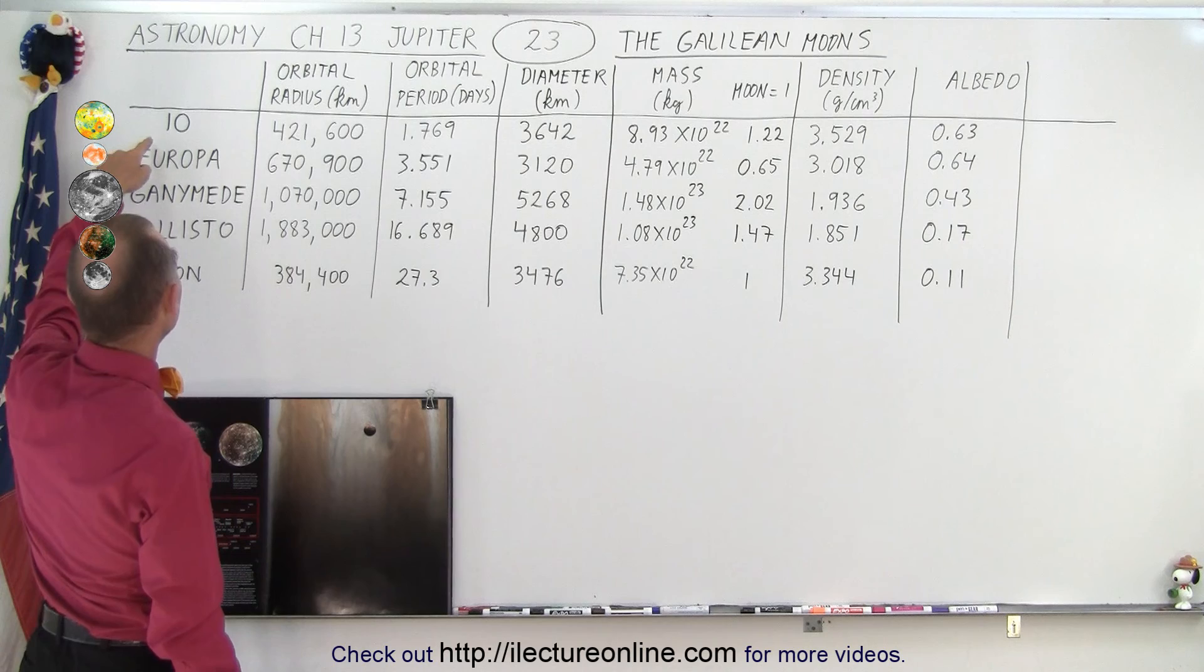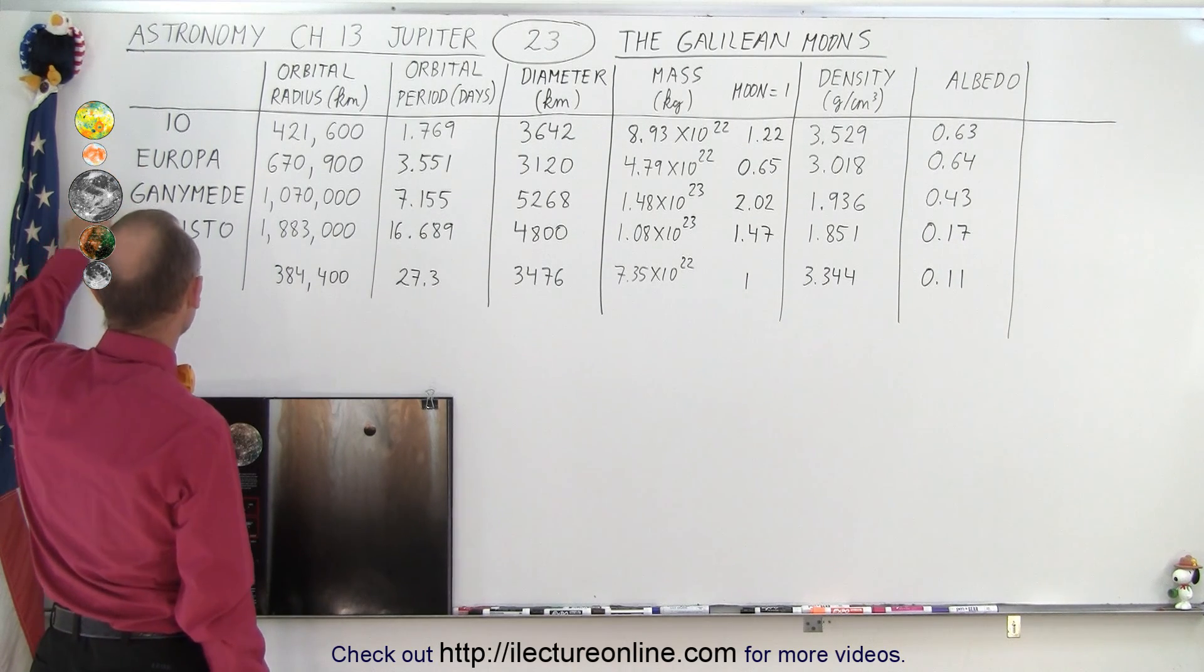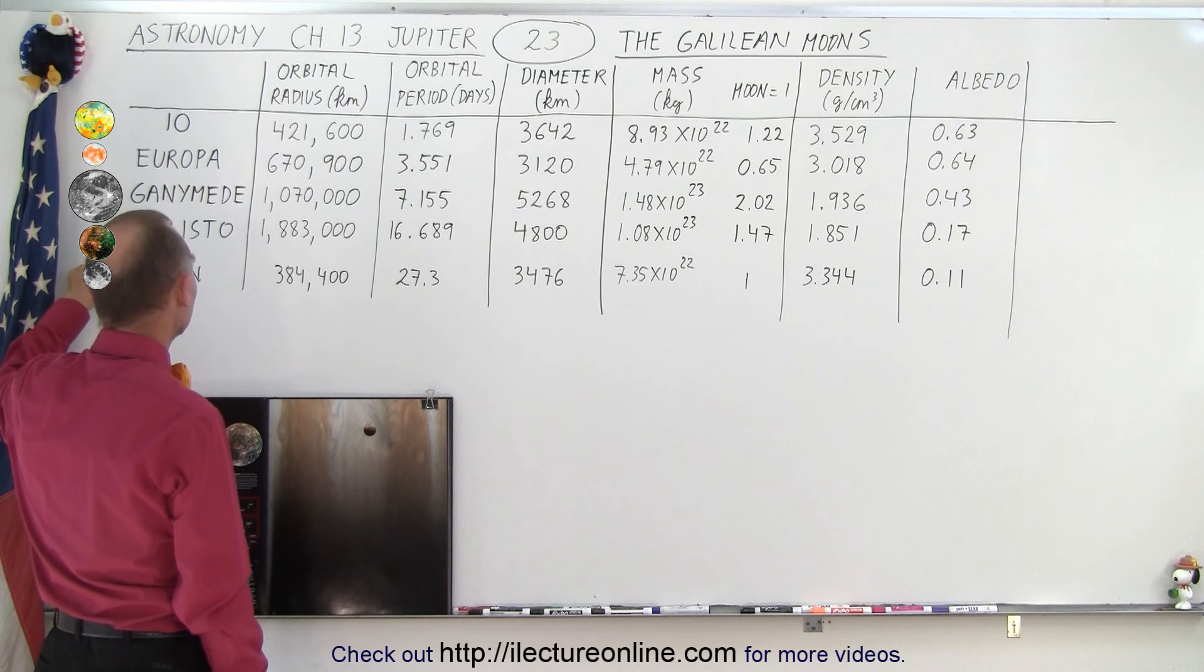Notice that they are in distance away from Jupiter: Io is the closest, then we have Europa, then we have Ganymede, and then we have Callisto.